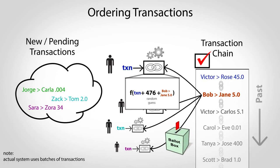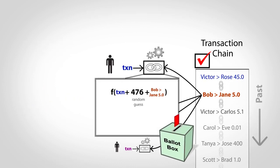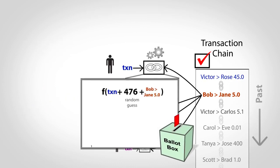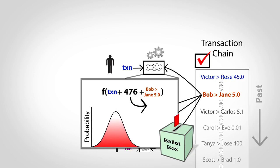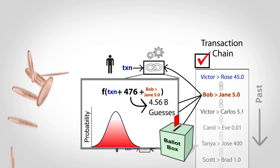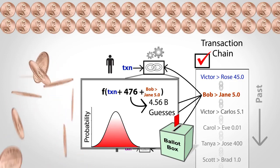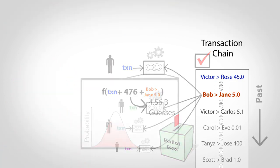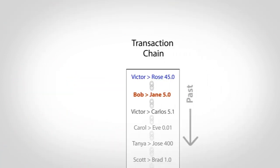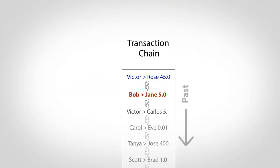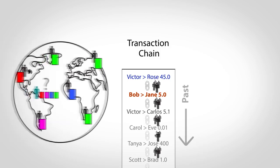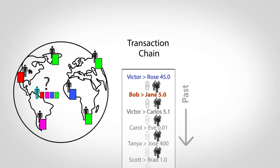But how are all the votes tallied? Because the cryptographic hash function has well-defined statistical properties, you can look at any given answer and estimate how many guesses it took to find it, just like estimating how many coin flips it would take to get 100 heads in a row. So the links in a chain not only put transactions in order, but also act as an effective vote tally, making it easy to see which chain most people are using.